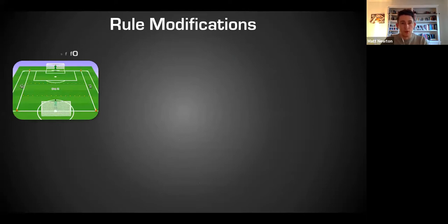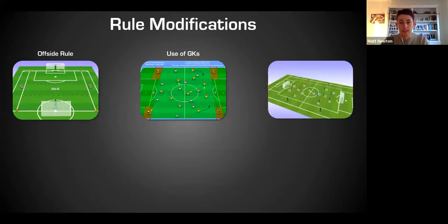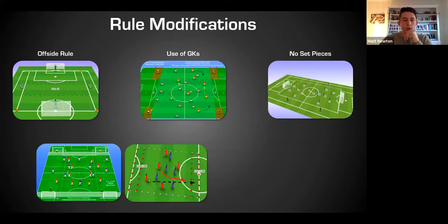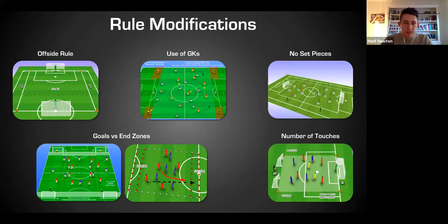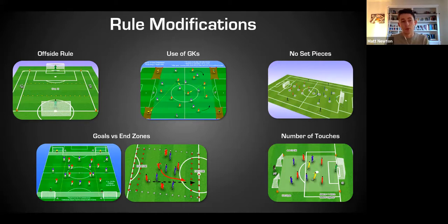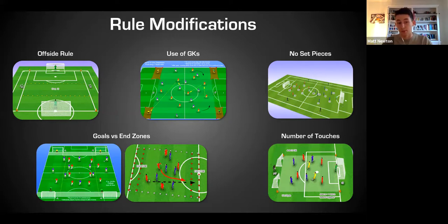Looking at rule modifications: using an offside rule reduces the physical demand of the small sided game but increases game realism and tactical work. Including an offside line encourages defenders to push up and trap players in offside positions, so strikers gamble less and you get less physical intensity but more tactical organization.